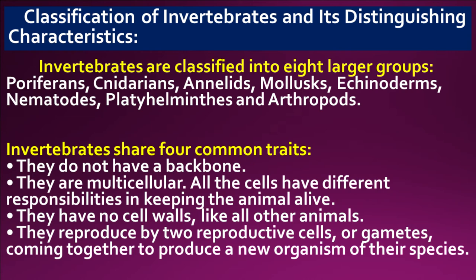Summary: Classification of invertebrates and distinguishing characteristics. Invertebrates are classified into eight larger groups: Porifera, cnidarians, annelids, mollusks, echinoderms, nematodes, platyhelminthes, and arthropods.